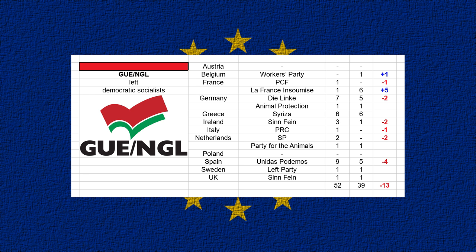Also in GUE-NGL: the Netherlands' Socialist Party, Spain's Unidas Podemos, Sweden's Left Party, and Sinn Féin in the UK, who have a seat in Northern Ireland and also in the Republic. Next, Greens-EFA had a good night, gaining a lot of seats particularly in France and Germany where the Green parties did very well, and also in the UK — an overall gain of 19 seats for Greens-EFA.